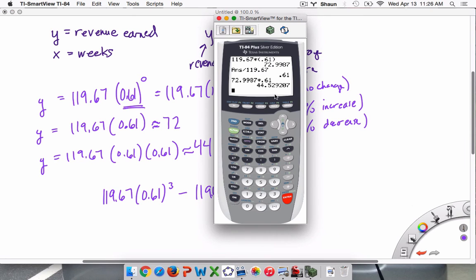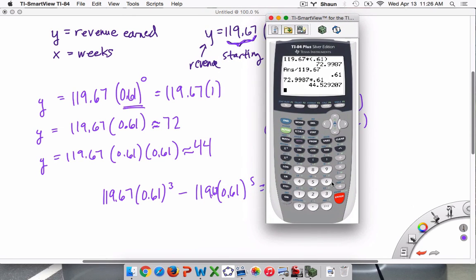And the calculator, what does this look like? Just throw it in there. 119.67 times 0.61. Now I'm going to raise that to the power of 3. But I'm going to put parentheses in there just to be safe. 2nd insert parentheses. And then close parentheses to the third power. Hit enter.